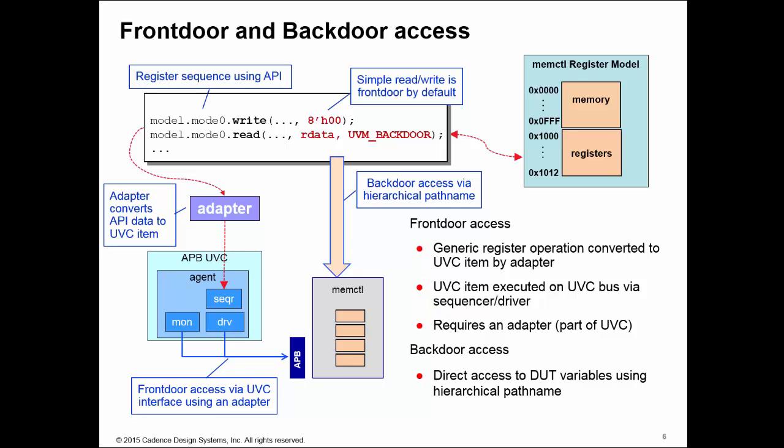Back door access is via hierarchical path name - like a standard Verilog out-of-module reference. It's a direct path name down to the variable in the DUT which stores the value of the register you're trying to access. This requires a path name that must be kept up to date with changes in your DUT. Normally this is part of your register model, and the read or write operation can extract that path name from the register model when it does a back door access operation.